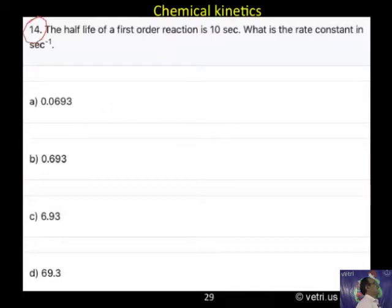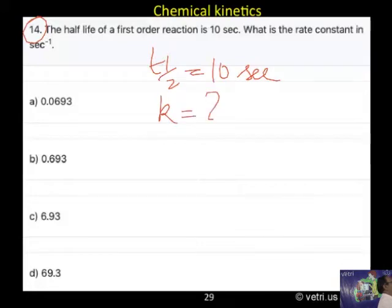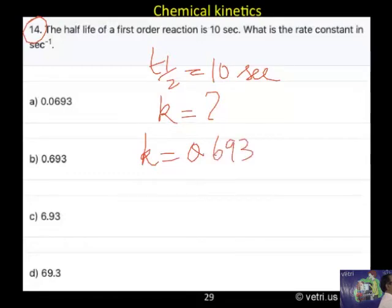Question 40: The half-life period of a first-order reaction, T half, is 10 seconds. 40 is the rate constant. Very, very simple. Because we know rate constant is equal to 0.693 by 10, that is equal to 0.0693.